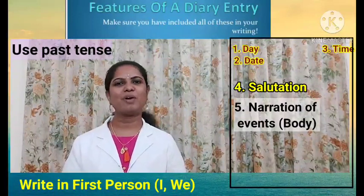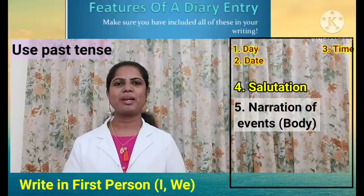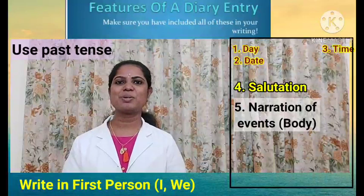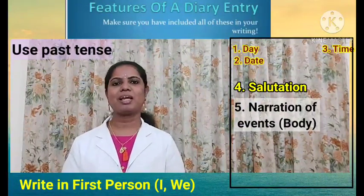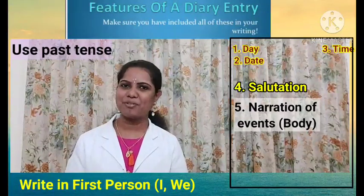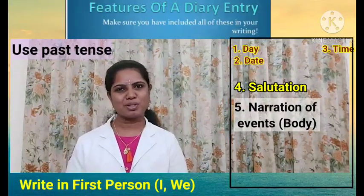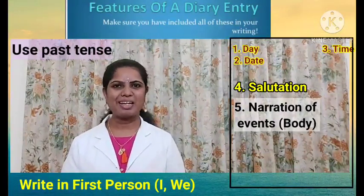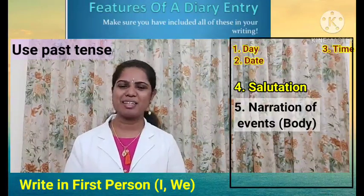At last, you can give a concluding remark. For example, if you became the top scorer, you can write: 'I will keep up my studies' or 'I will maintain good scores in my life.' You can conclude in such a manner. Then you can write 'Bye for now' and sign your name. This 'bye for now' is not compulsory, but since you consider your diary as your best friend, you can write in such a manner. So, to recap: mention the day, date, and time; give the salutation; narrate the events; and conclude with 'Bye for now' and your name.